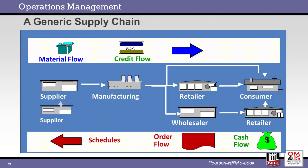Here is a typical flow diagram for a supply chain. We start from the left and finish with the ultimate customer on the right. Note that material and credit flow to the right, while schedule, orders, and cash flow to the left. Information must be shared in both directions.